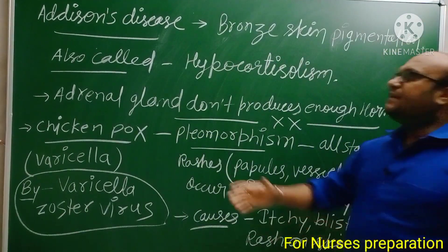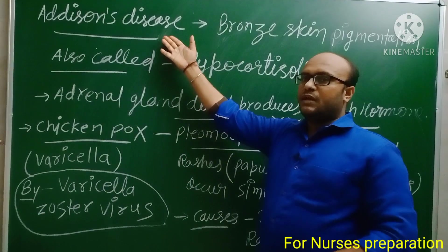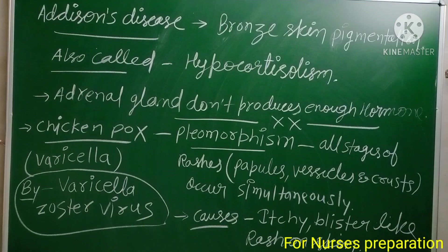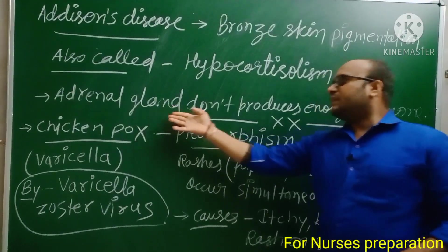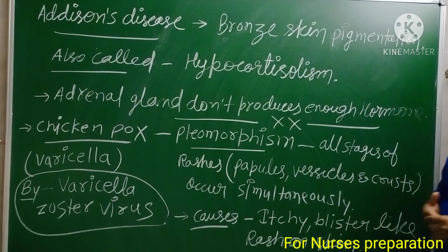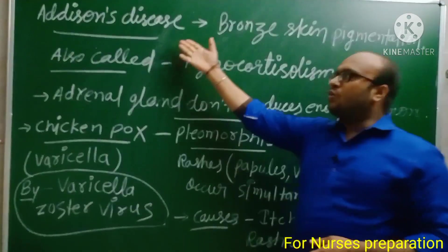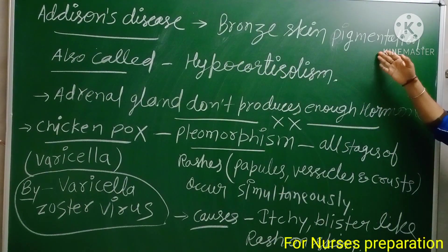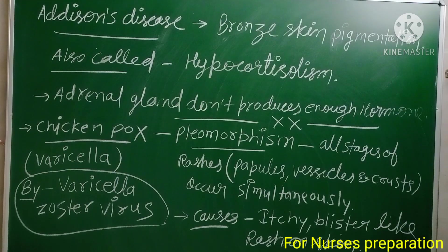The first disease is Addison's disease, also known as hypocortisolism. This disease occurs because the adrenal glands do not produce enough hormones. An important sign of this disease is bronze skin pigmentation. Bronze color pigmentation of the skin is a very important sign of Addison's disease.